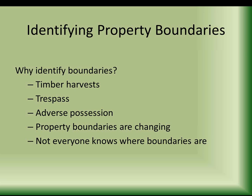Our boundaries are changing all the time. It might be that you've had the same neighbor for decades, and all of a sudden they decide to pass their land on to their kids. There are three of them, and they divide the land up into equal thirds — suddenly instead of one neighbor you have three, and none of them have a good idea where the property boundaries are. You have to reestablish all the relationships, and make sure everybody's clear where the boundaries are.